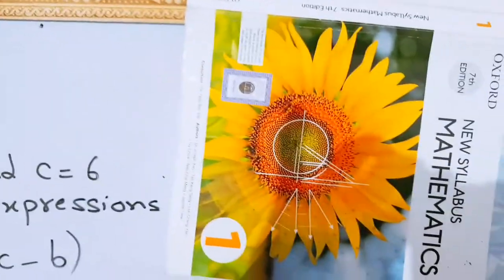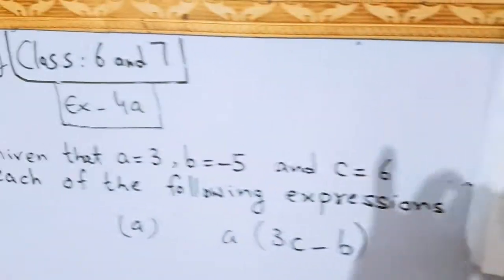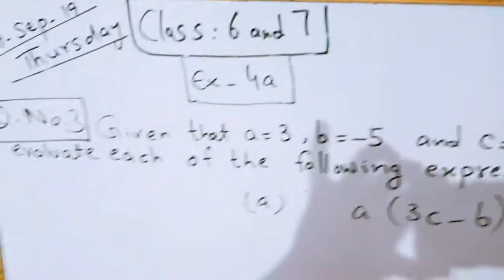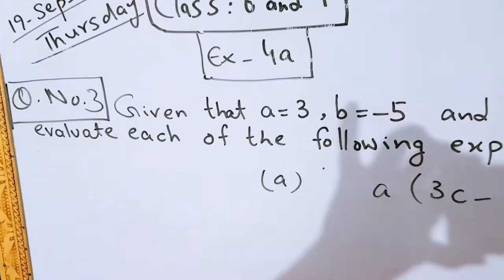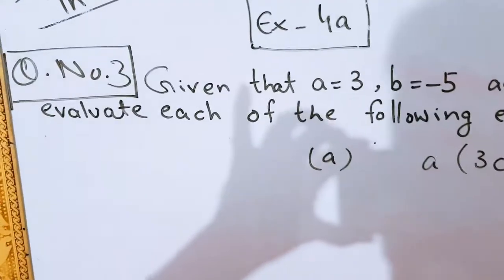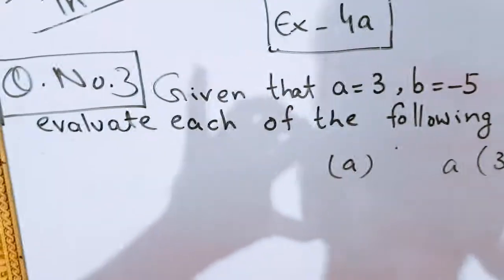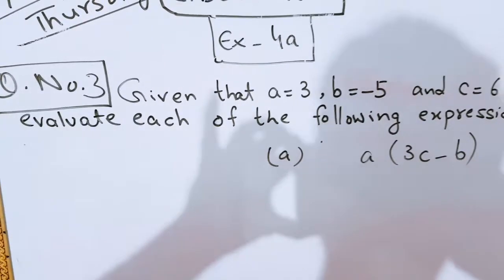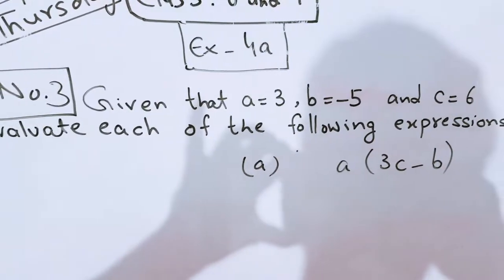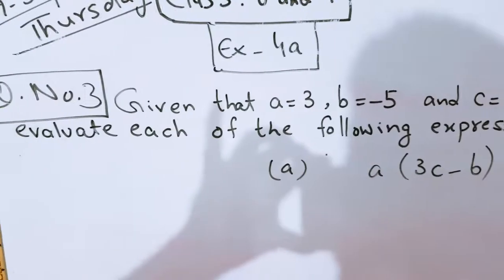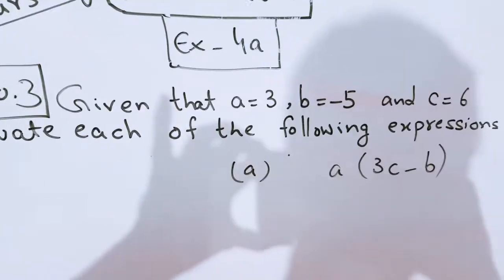And if you have the book available nearer to you, then open chapter 4, exercise 4a and question number 3. I have already done question number 2 in my previous video. Let's read the question carefully first of all before solving the question. Given that a is equal to 3, b is equal to minus 5 and c is equal to 6. Evaluate each of the following expressions.